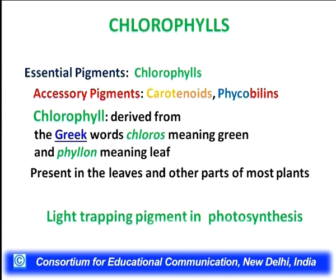Although chlorophyll implies green leaves, leaves may change their color and hue depending on environmental conditions and physiological status. Chlorophyll is present not only in leaves but in other green parts of the plant as well — if a stem is green, that tissue is also trapping light and contributing to photosynthesis.